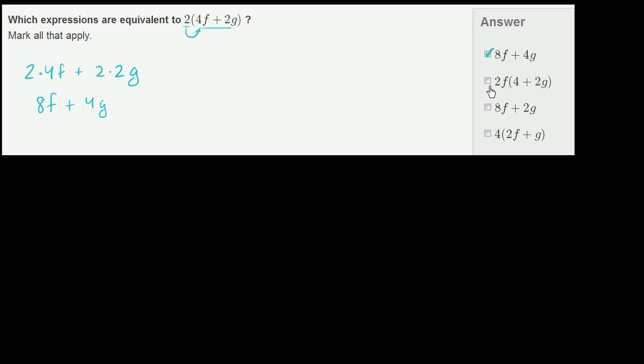If we distribute the 2f, you'll get 2f times 4 is 8f squared. And 2f times 2g is plus 4fg, which is very different than 8f plus 4g. This is 8f plus 4fg. So this one is not an equivalent expression.